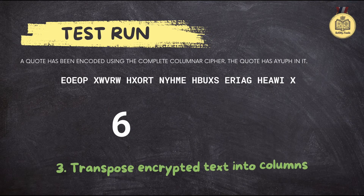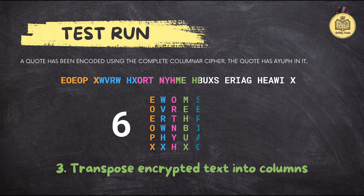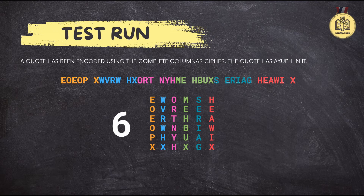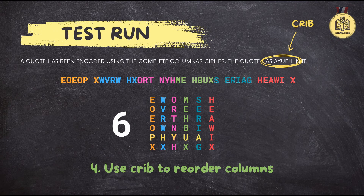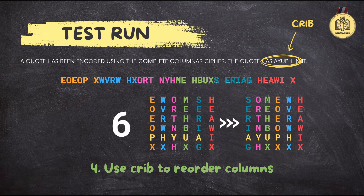Let's try 6 columns. Six columns and 36 letters means 6 letters in each column. And wait — I see it! Look in the 5th row: there's A, then Y, then U, P, H. We found it! Awesome — you're a natural. Now just rearrange the columns so the crib spells A-Y-U-P-H. Moving the A column to the front, then Y, then U, P, and H. It's amazing how they suddenly make sense when you put them in the right order.